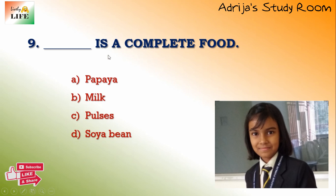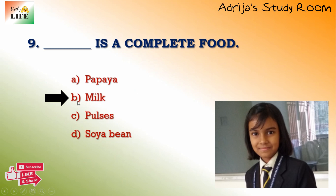Next question: dash is a complete food. A complete food means all the nutrients should be present in it. The options are papaya, milk, pulses, or soybean. Milk is a complete food — it contains all the nutrients. Papaya, pulses, and soybean are not complete foods. So milk is a complete food — the answer is B.